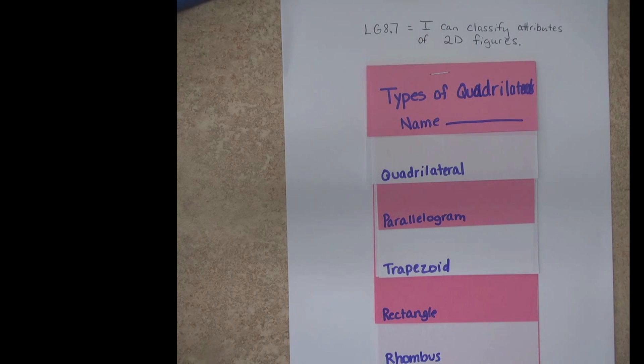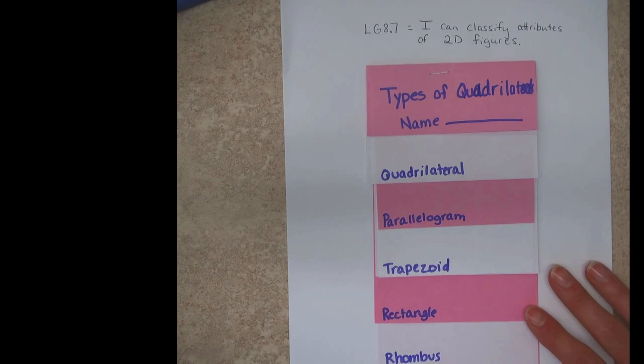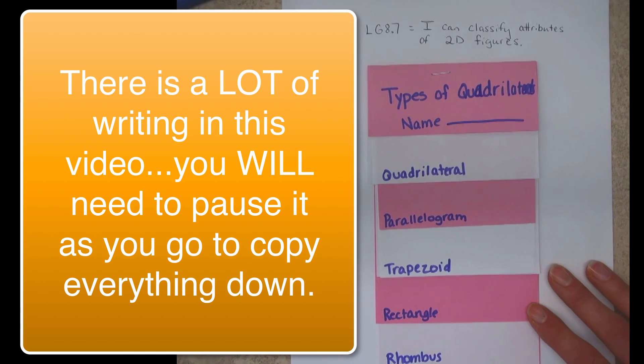We're on to the last learning goal, which is I can classify attributes of two-dimensional figures. You don't even have to write that down, we just want you to be aware of that. You should have your foldables that you made ahead of time. This one is a little bit different. We're just going to make sure you understand what these words mean and see a visual along with it.